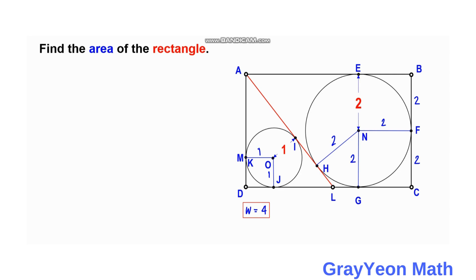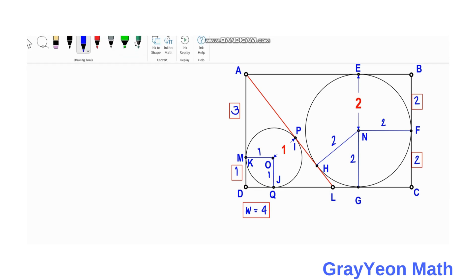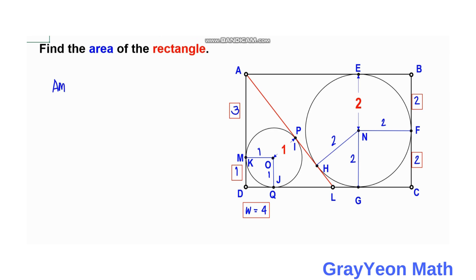Since the total width of the rectangle is four, and MD is one, then AM must be four minus one, which equals three. So AM is three. Because AM and AP are both exterior tangent segments from the same external point A, tangent to the circle at M and P respectively, we have AP equal to AM, so AP is also three.